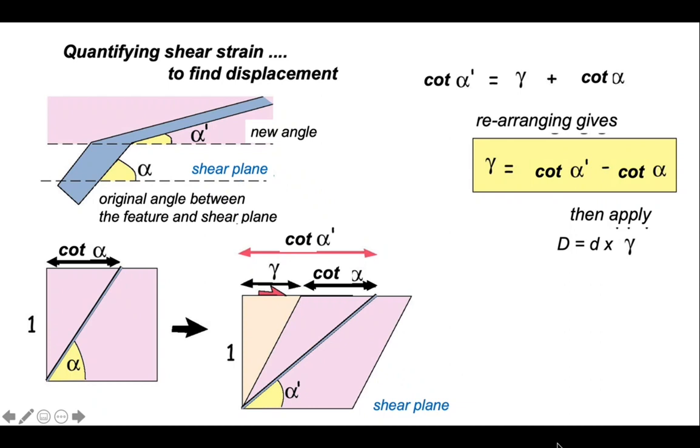We can then simply apply that to our relationship we looked at just now by multiplying gamma by the width of the shear zone, the distance term little d, and that gives us displacement. So we have a method now for establishing the shear strain for pre-existing markers that are deflected into the shear zone, provided we know the original orientation of that feature, which we may be able to measure outside the shear zone.